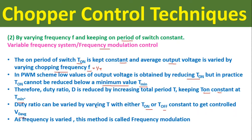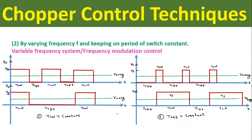As the frequency is varied in this scheme by varying the total time period, this method is called frequency modulation control. Here we have drawn two figures: the first one is when we keep the on period of the switch constant, and the second one is when we keep the off period of the switch constant. When we keep Ton constant, we can vary the off period to vary the total time period and eventually vary the frequency. In this figure we can see Ton is kept constant while the off period is varied.